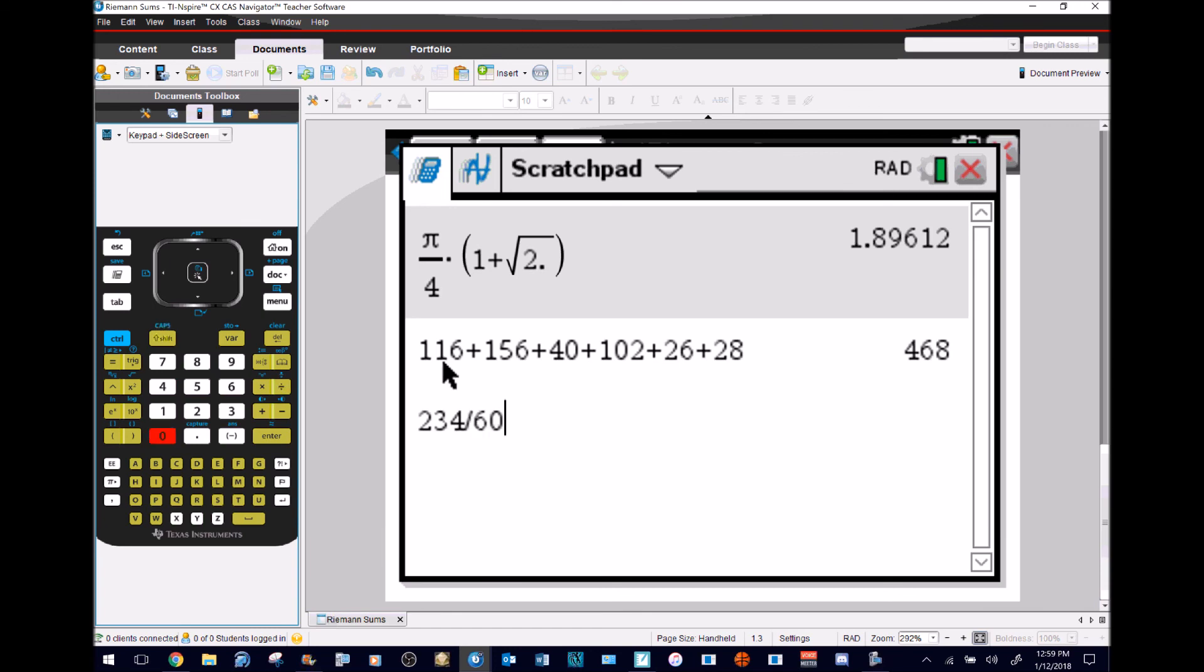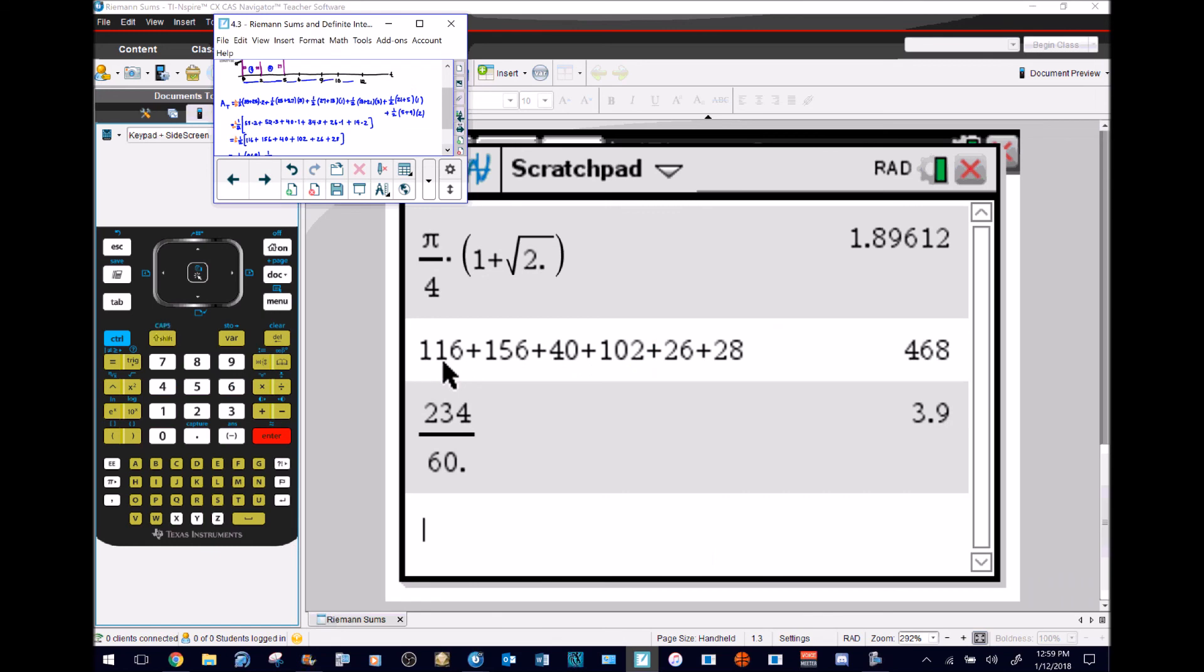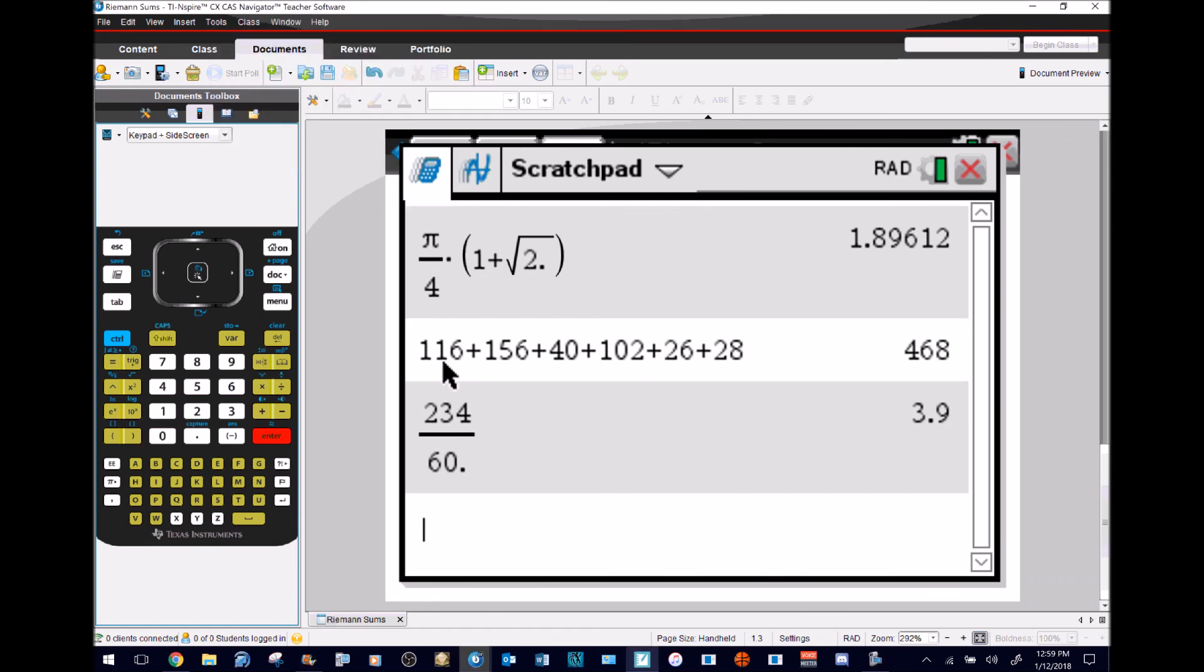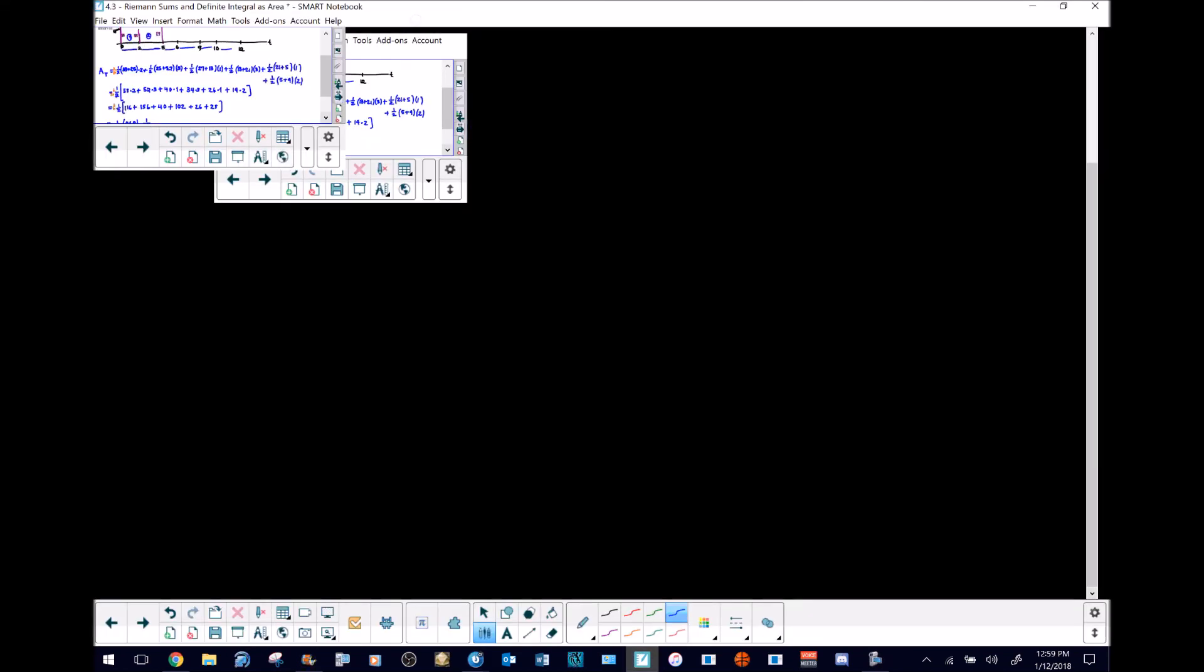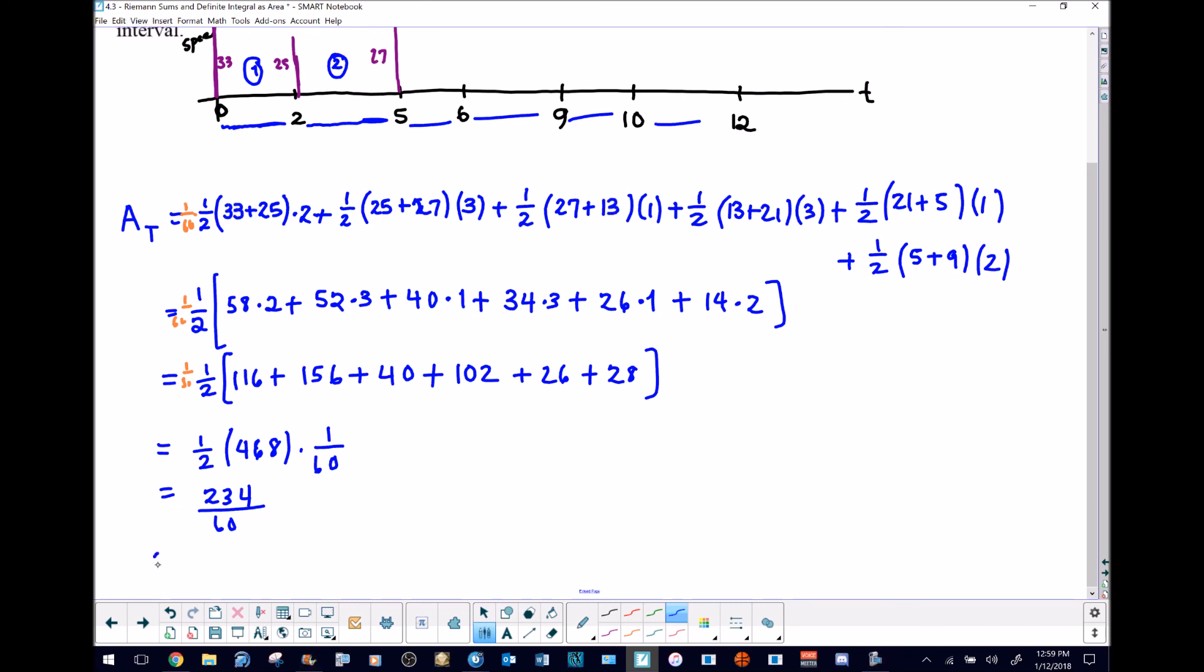Now that makes a lot more sense. We can say in this particular problem that this is going to be equivalent to 3.9 miles, and that does make a lot more sense. In 12 minutes that's exactly how far this rider was able to go.